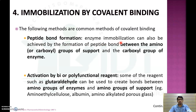Another method of covalent bonding is peptide bond formation, in which enzyme immobilization is achieved by formation of a peptide bond between the amino group or carboxyl group of the support and the carboxyl group of the enzyme. Activation by a polyfunctional reagent is yet another method for covalent bonding.